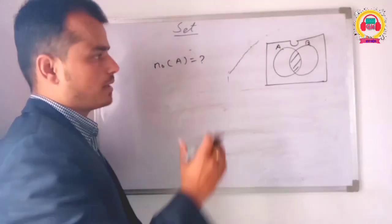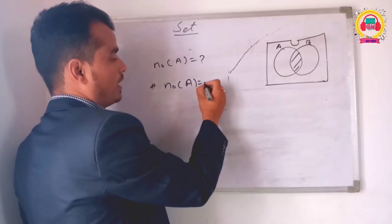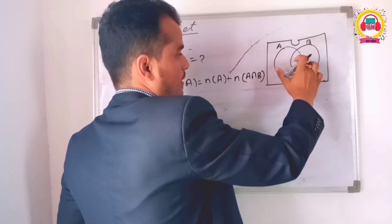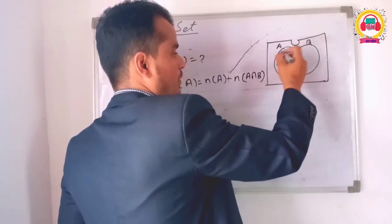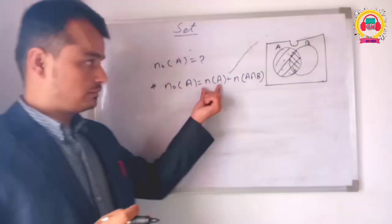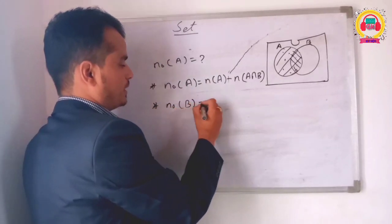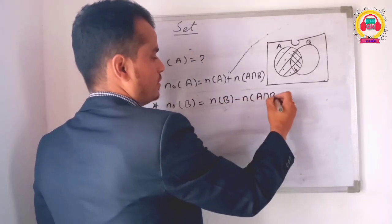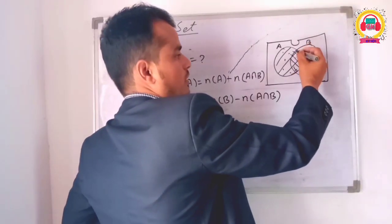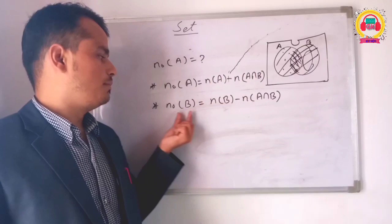In this case, if you want to write 'only A,' you can write the whole intersection part. You can write the intersection part. Only B is found the same way: number of B minus number of A intersection B. What do you need to do? Only A is the intersection, only B is the intersection.